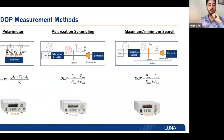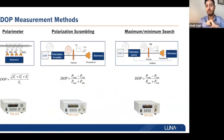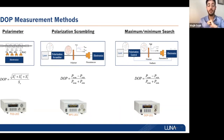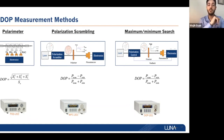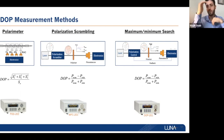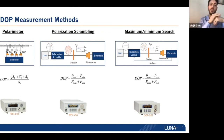Degree of polarization is very important because it can affect measurement accuracy in fiber sensing and OSNR in telecom applications. Measuring DOP with high accuracy is very important. There are three technologies at Luna to measure degree of polarization. The first is the polarimeter method — by knowing the four powers and constructing the Stokes vector, we can measure DOP with the standard equation.